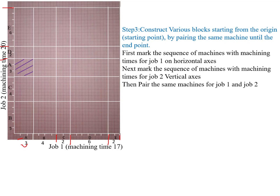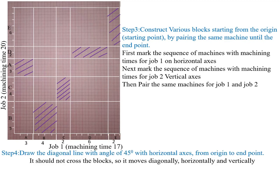Next, we pair the same machines for Job 1 and Job 2 by shading the common area. Machine A for Job 1 and Machine A for Job 2 are paired by shading the common area. Similarly, we pair Machine B, Machine C, Machine D, and Machine E for Job 1 and Job 2.